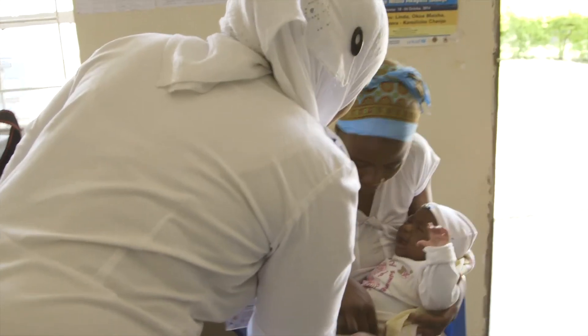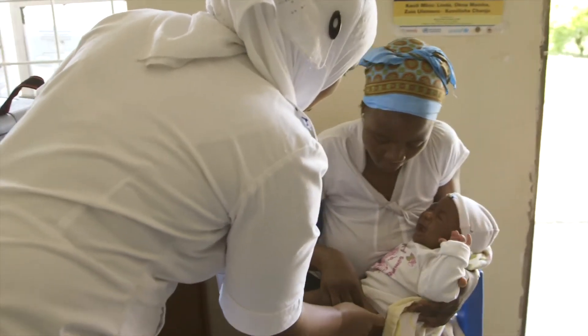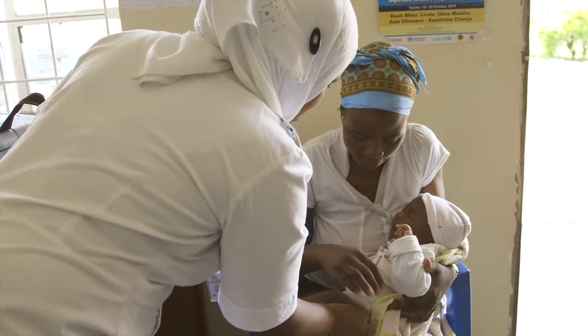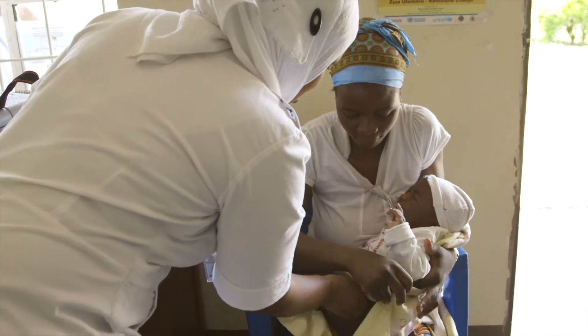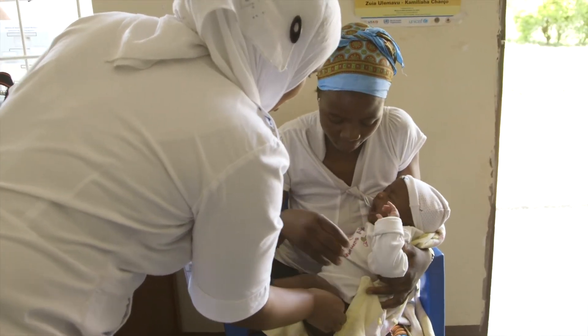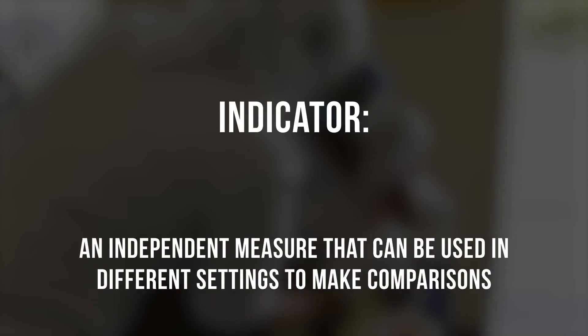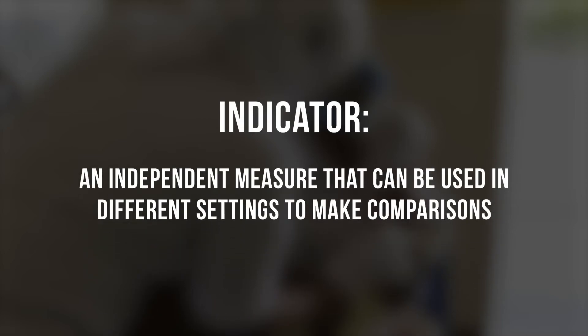To effectively monitor your surveillance system, there must be a set of performance indicators to measure your progress. A well-designed indicator is an independent measure that can be used in different settings so that comparisons can be made.